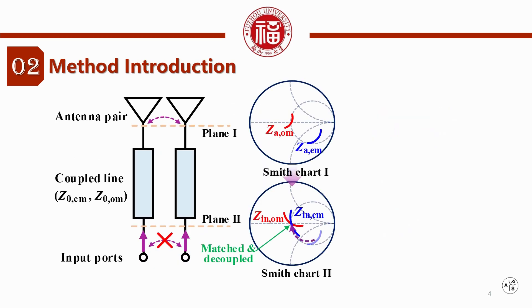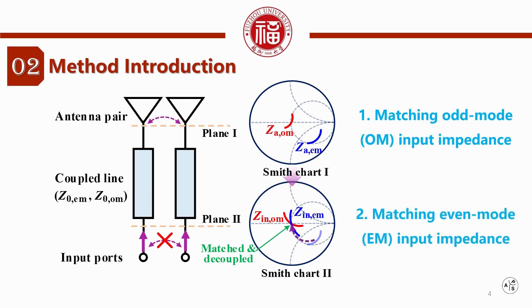In this work, based on the even mode and the odd mode analysis of antennas, we propose a decoupling and matching scheme as shown in the figure. First, we match the odd mode input impedance by adjusting the antenna structure. And then, we add a coupled transmission line behind the antenna to match the even mode input impedance.